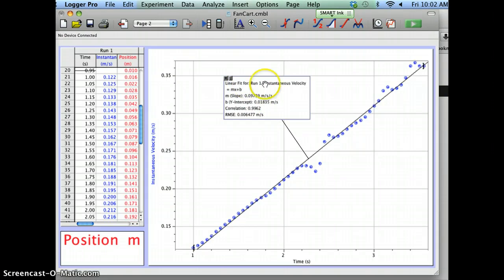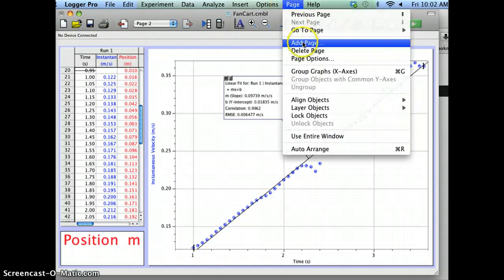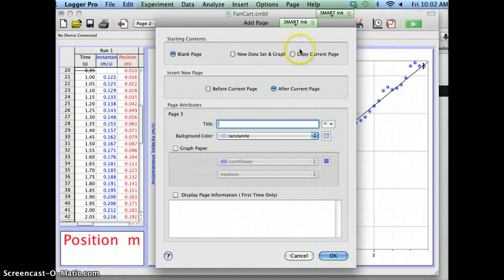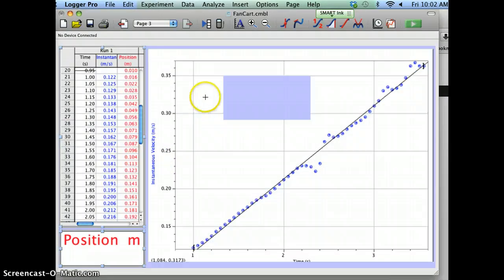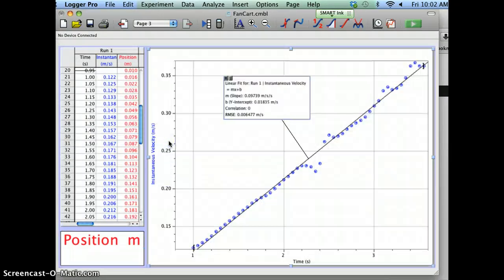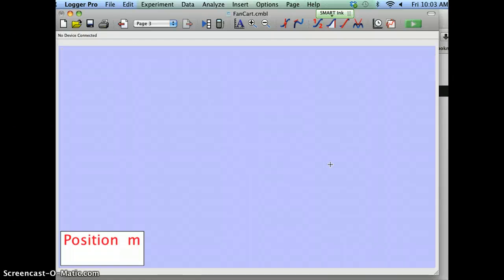So now I'm going to add a page 3. This is the part you'll have to do on your own. So I'm going to go add page, copy current page. That's pretty much what I always do. Now I've got a page 3, except I want two graphs here. So I will copy this graph. See how it's highlighted? When it's highlighted, I copy it, and then I paste a new one there.